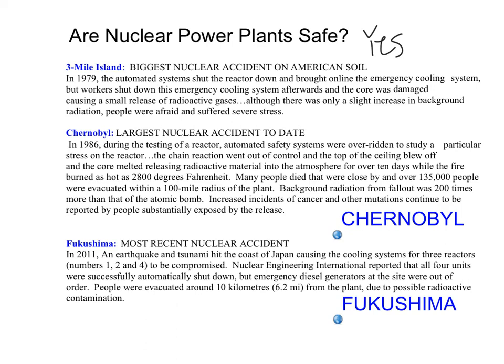Most recently, in 2011, an earthquake and a tsunami off the coast of Japan hit the Fukushima nuclear plant. The plant was designed to survive an earthquake and designed to survive a tsunami — just not necessarily both at the same time. There were no deaths reported from the actual nuclear accident; all deaths in the Fukushima incident were caused during the evacuation or from the earthquake and tsunami themselves.